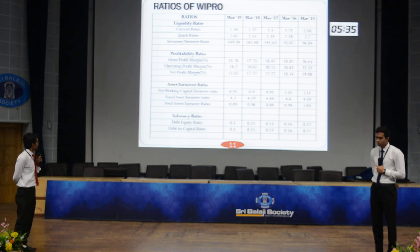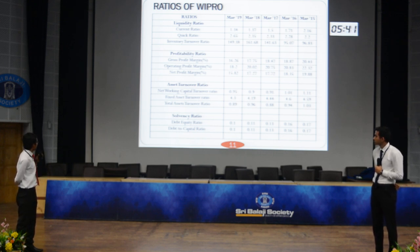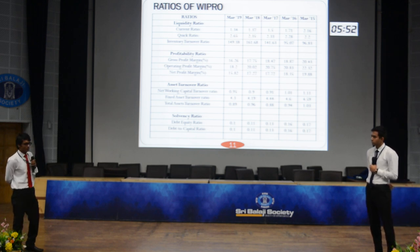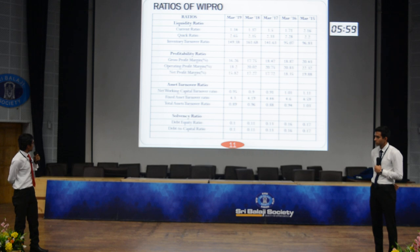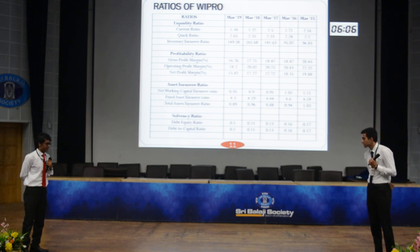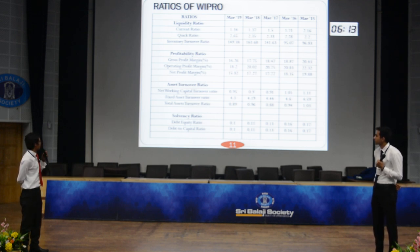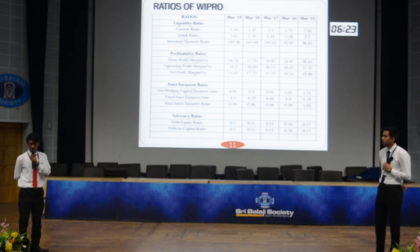These are some of the ratios we have calculated and found. They include liquidity ratio, profitability ratio, asset turnover ratio, and solvency ratio. From the liquidity ratio, an investor would be able to know the relationship between the company's current assets and their current obligations.